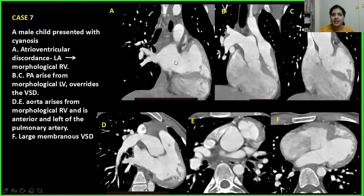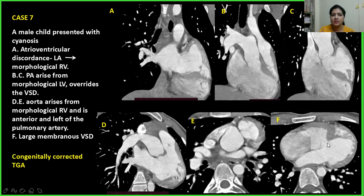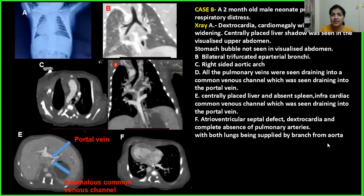Case 7: A male child presented with cyanosis. Pulmonary veins draining into the left atrium, which was opening into the morphological right ventricle. The pulmonary artery arising from the morphological left ventricle overrides the VSD. The aorta originates from the morphological right ventricle and is anterior, superior, and left to the pulmonary artery, with a large membranous VSD. This was a case of congenitally corrected TGA.